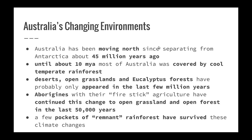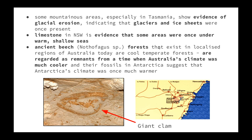Aborigines with their fire stick agriculture have continued this change to open grassland and open forest in the last 50,000 years. A few pockets of remnant rainforest, remaining in inaccessible places such as deep valleys, have survived these climate changes. Some mountainous areas, especially in Tasmania, show evidence of glacial erosion, indicating that glaciers and ice sheets were once present.